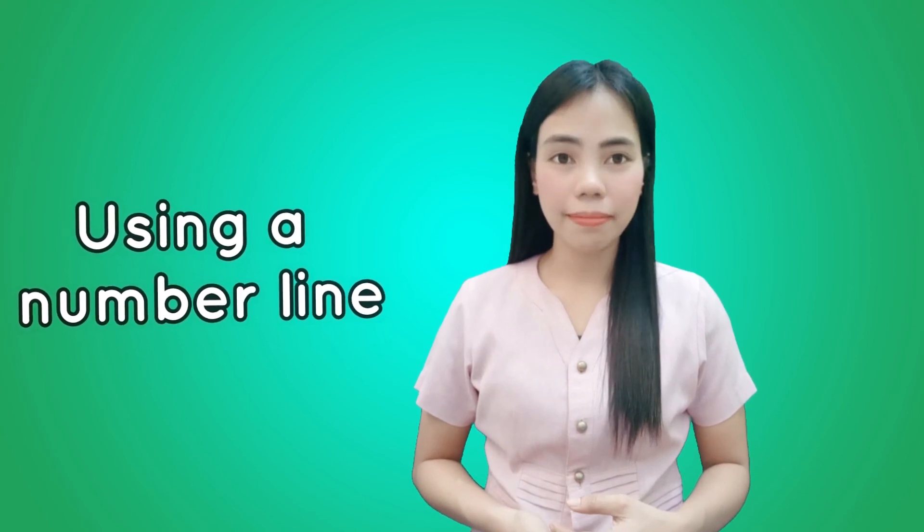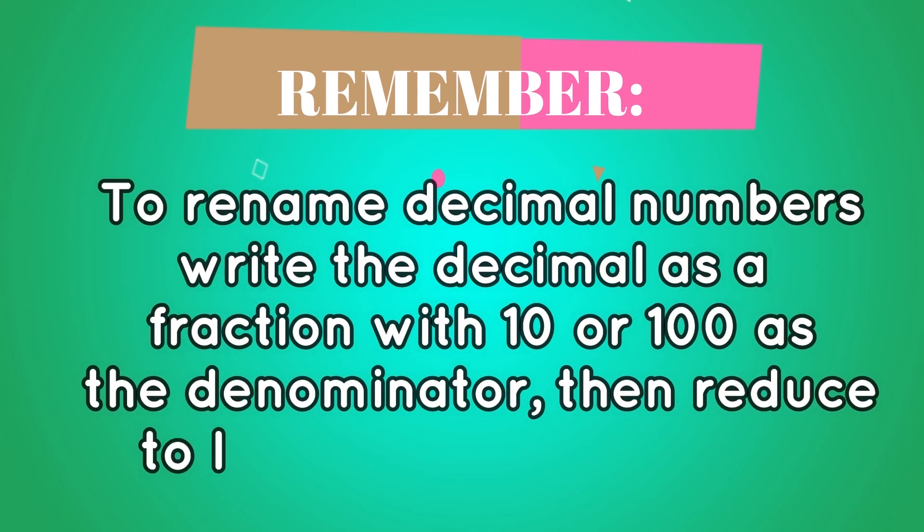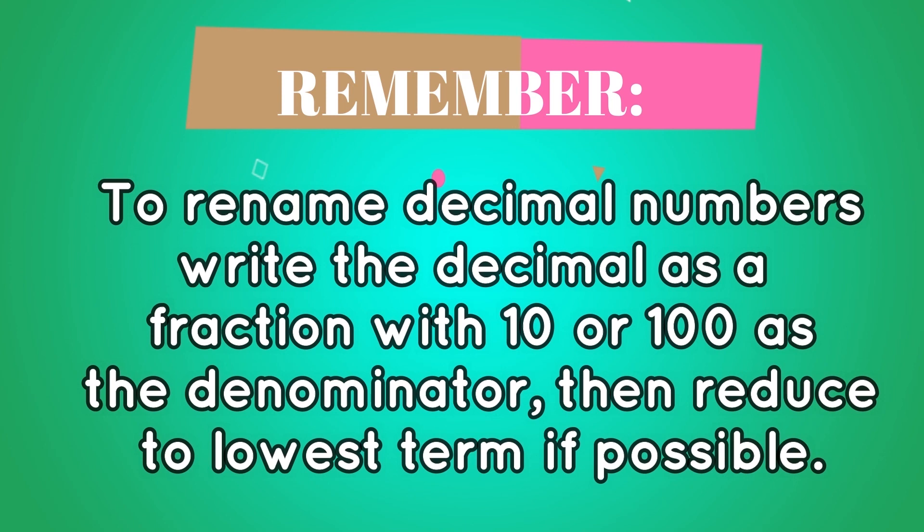There are different ways to rename a decimal number to a fraction, such as writing in words then to symbol, through a number line, or by representing the parts in regions or grids. Whatever strategy is used to find the fractional form of a given decimal number, you will get the same answer. Remember: to rename decimal numbers to fractions, write the decimal as a fraction with 10 or 100 as the denominator, then reduce to lowest terms if possible.